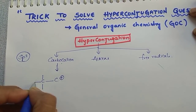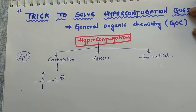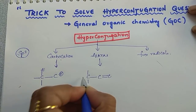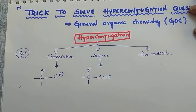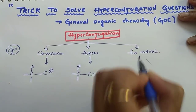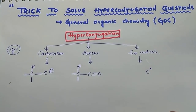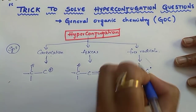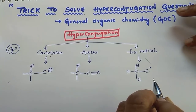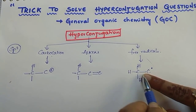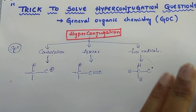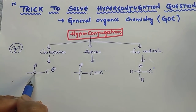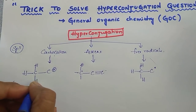A carbocation is a carbon with a positive charge — it should be connected with an sp3 hybridized carbon that has at least one alpha hydrogen. An alkene is a double-bonded carbon — it should be connected with an sp3 hybridized carbon having at least one hydrogen. A free radical is a carbon with a single unpaired electron — it should be connected with an sp3 hybridized carbon with at least one alpha hydrogen. The carbon next to the reference carbon is called the alpha carbon, and the hydrogens on it are alpha hydrogens.